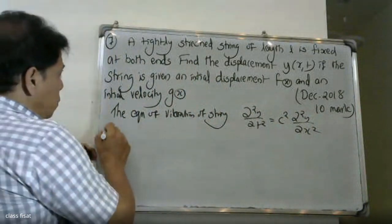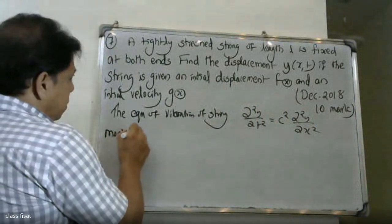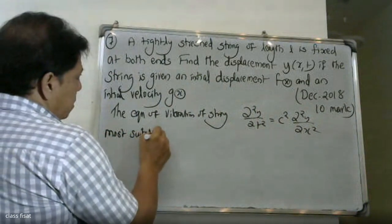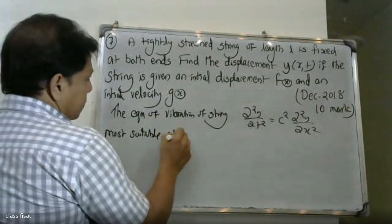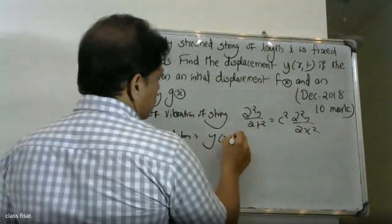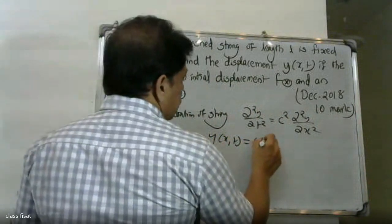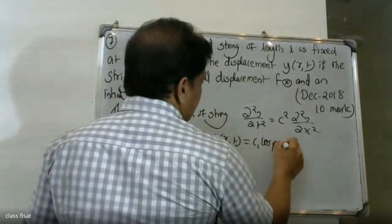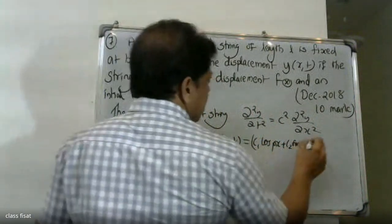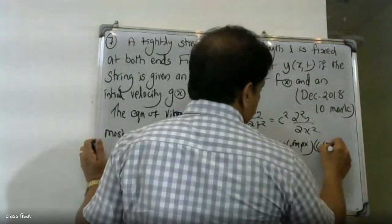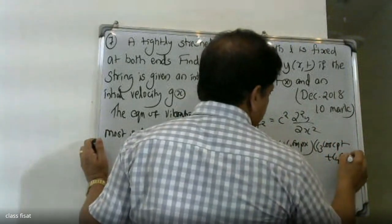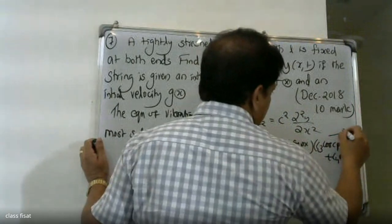The most suitable solution is Y(x, t) = (C1·cos(px) + C2·sin(px)) × (C3·cos(cpt) + C4·sin(cpt)). This is equation A, and now we apply the boundary conditions.